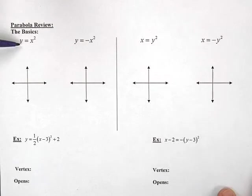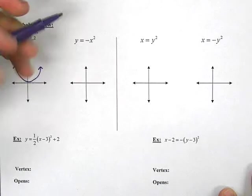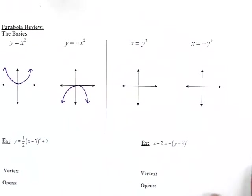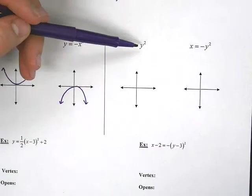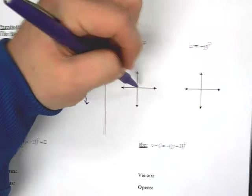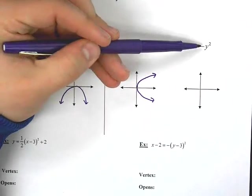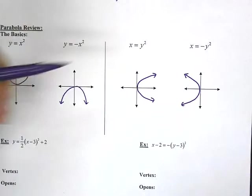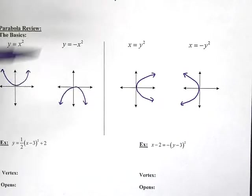We know that if we have y equals x squared, the coefficient of x is positive, which means we're going up. Or if it's negative, we would go down. Hopefully you guys remember, this is from way, way back: if we have x equals y squared, it actually opens to the right. And a negative y squared would be going to the left. I think in our very first chapter, we had some parabolas that were opening left and right.